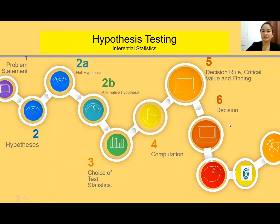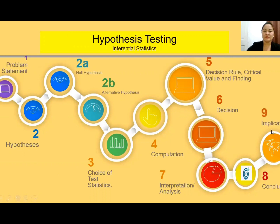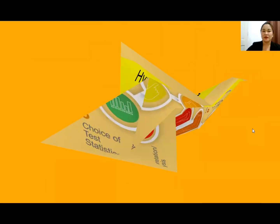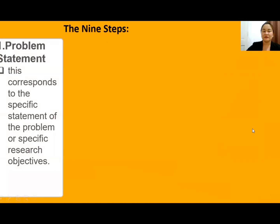Sixth, we have the decision — whether you are going to accept or reject the null. Seventh is the interpretation or analysis. Eighth, we have the conclusion. And ninth is the implication. Now, the first step is the problem statement, which corresponds to the specific statement of the problem or your specific research objectives.